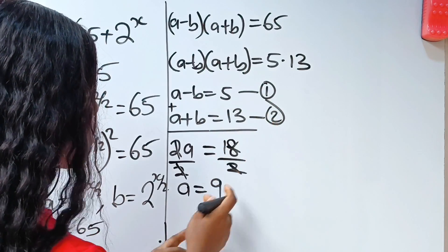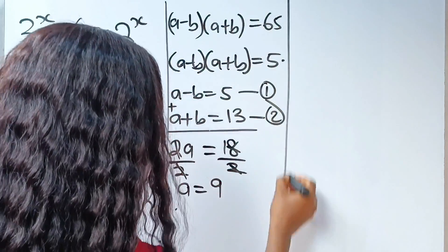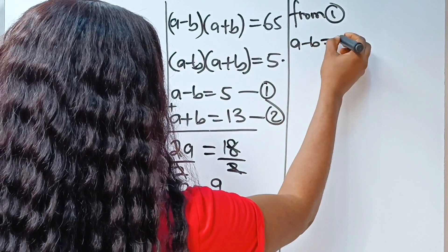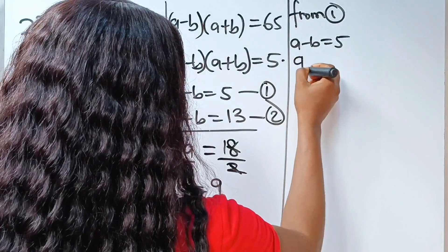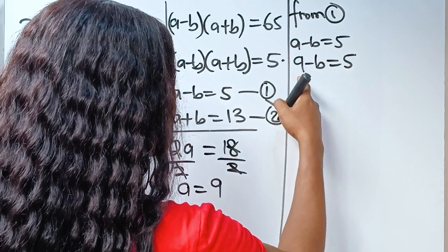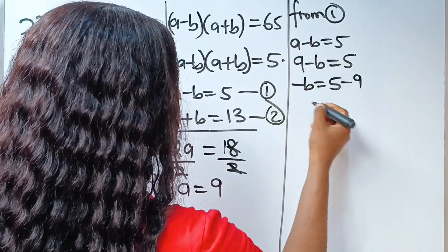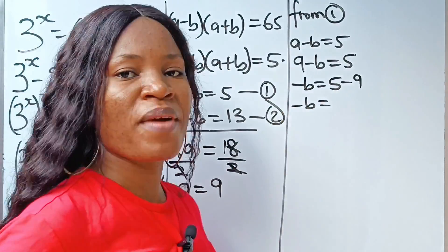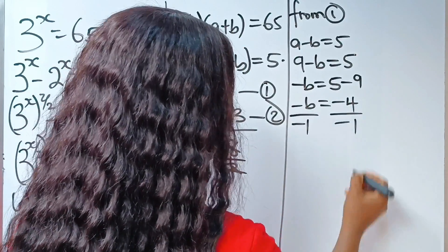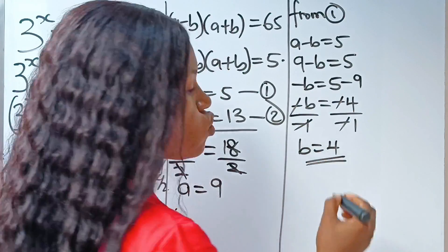Let's substitute this into any of the equations to get the value of b. From equation 1, we have a minus b is equal to 5. Recall that our a is 9, so 9 minus b is equal to 5. To get b, let's transfer 9 to the other side: minus b is equal to 5 minus 9, which gives us minus 4. Dividing both sides by minus 1, we have that b is equal to 4.